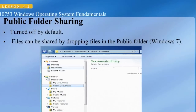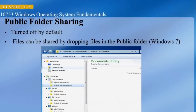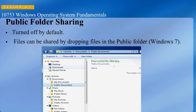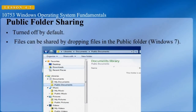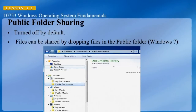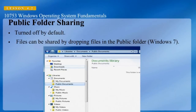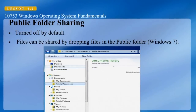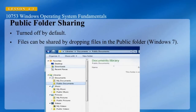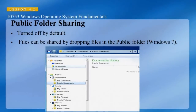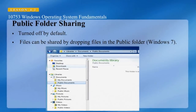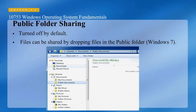In Windows 7, public folder sharing is turned off by default. But you can enable it, and then you can share files by dropping them into the public folder. Then anyone on your network in your workgroup is able to view your files in the public folder.